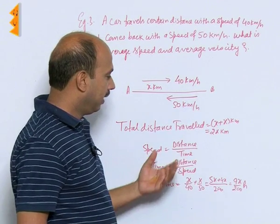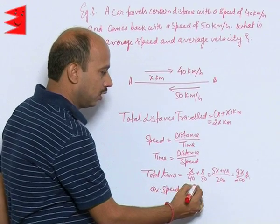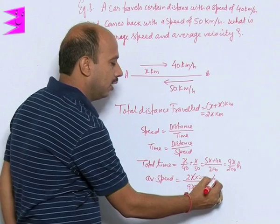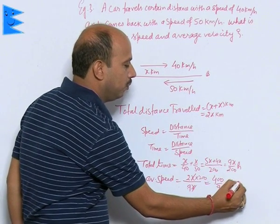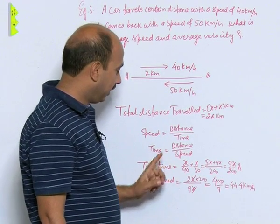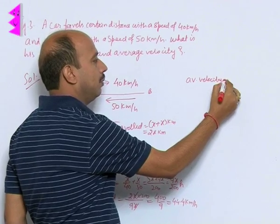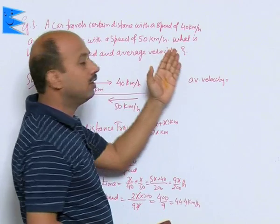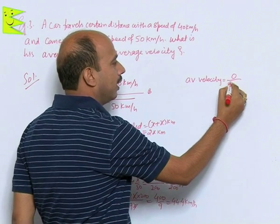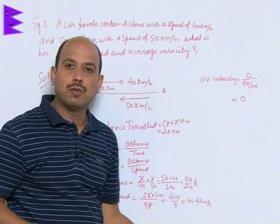Average speed equals total distance divided by total time: 2x divided by 9x/200. The 200 comes to the numerator and the x terms cancel, giving 400/9, which equals approximately 44.4 kilometers per hour. For average velocity, since the body returned to the same position, displacement is 0, so average velocity equals 0 divided by 9x/200, which equals 0. Average velocity is 0 while average speed is 44.4 km/h.